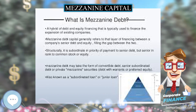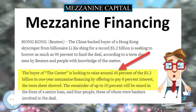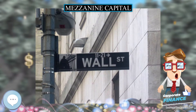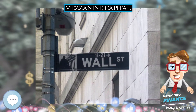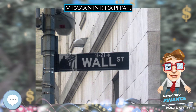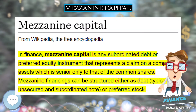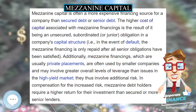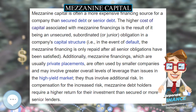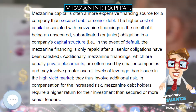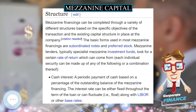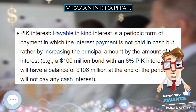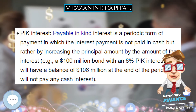Structure. Mezzanine financings can be completed through a variety of different structures based on the specific objectives of the transaction and the existing capital structure in place at the company. The basic forms used in most mezzanine financings are subordinated notes and preferred stock. Mezzanine lenders, typically specialist mezzanine investment funds, look for a certain rate of return, which can come from each individual security or a combination thereof.